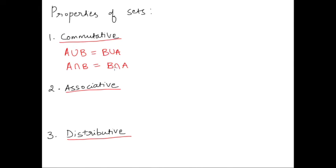A intersection B is equal to B intersection A. We will go through a few examples, numerical examples, to make this more clear, but here I just wanted to give you guys a brief idea of what we are exactly going to achieve today.